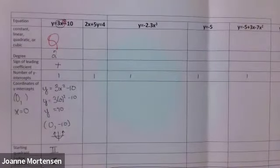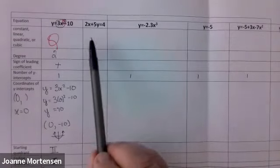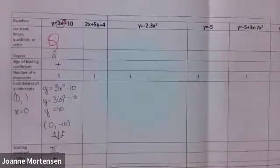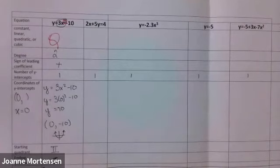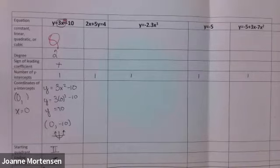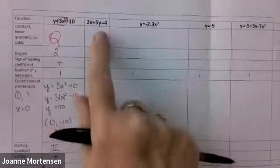Now the next one is a trick question. Look at this equation versus all the other examples. What's different about this second one? It's got a 2x and a 5, but all these rules only work if you start with y equals something, so we need to fix this.